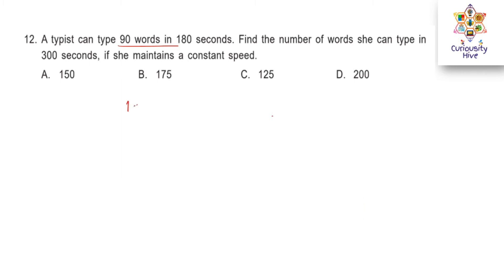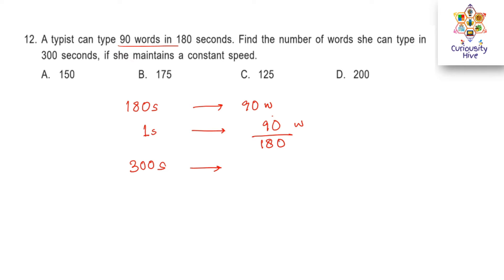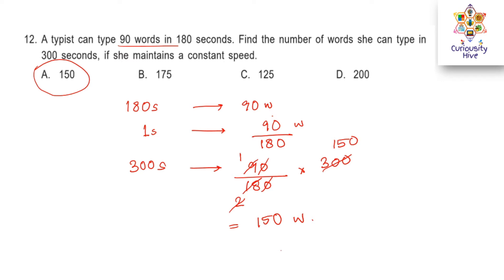The typist types 90 words in 180 seconds. So in 1 second she types 90 divided by 180 words. In 300 seconds she will type 90 divided by 180 times 300. Zeros cancel and 9 times 1 is 9, 9 times 2 is 18, and 300 divided by 2 is 150. So the typist types 150 words in 300 seconds. That is option A.